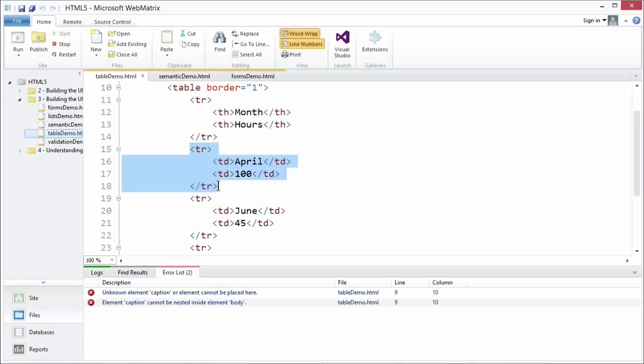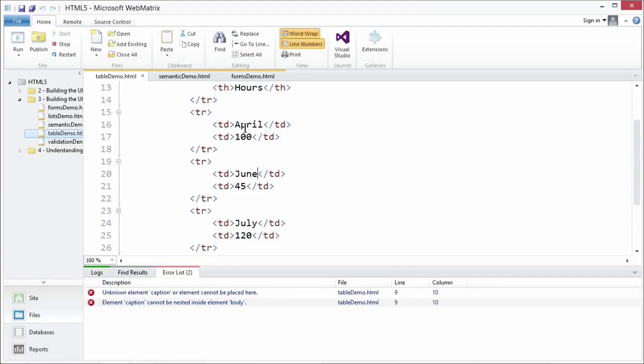Well, here I've got a table with a border. So I'm using the border attribute of one in order to make sure that we outline our table. And then I've just got the first row, which is going to be the header with month and hours. Then I have the second row, which is going to be April, which is the month. Notice how those match up. Then 100 is the number of hours that I worked. And I've got my third row here for June.